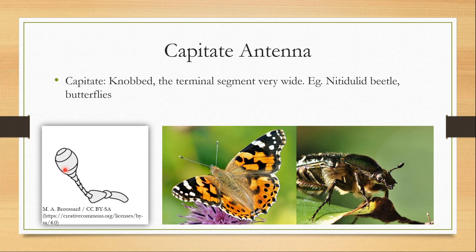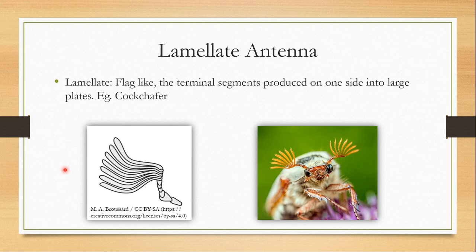The next type is lamellate antennae. This looks like a flag or a fan — the terminal segments are produced on one side to form large plate-like structures or extensions. This is found in cockchafers.